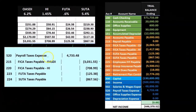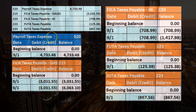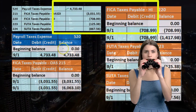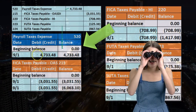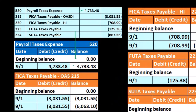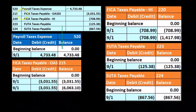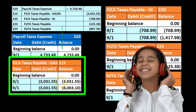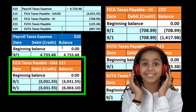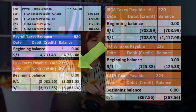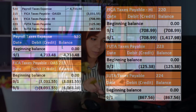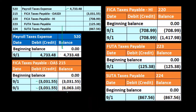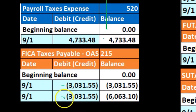Now let's look at the general ledger to see this data posted. Looking at the payroll expense account, it started at zero and we debit it $4,733.48, bringing it to that balance. For account 215 (OASDI), before this journal entry it was at $3,031.55 representing the employee portion already recorded. We're now crediting it an additional $3,133.55 in the employer portion, bringing the total to $6,063.10 — representing both the employee and employer portions combined.